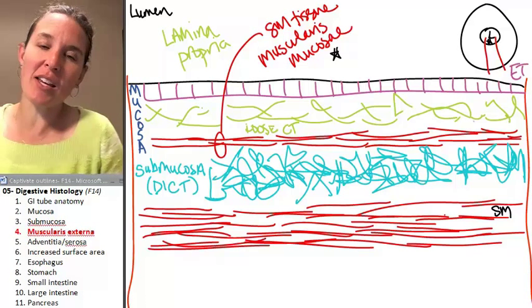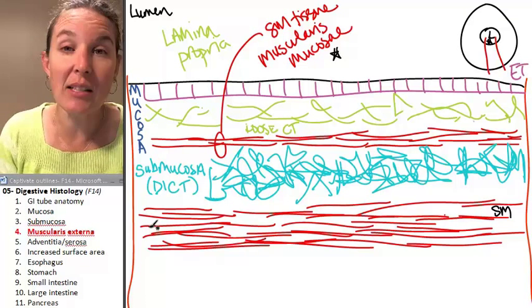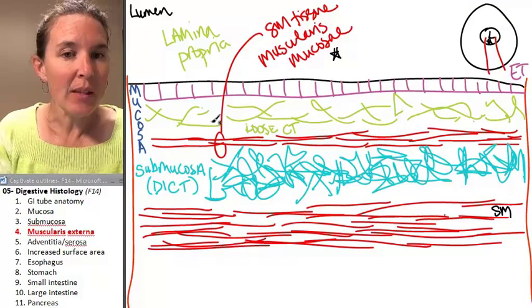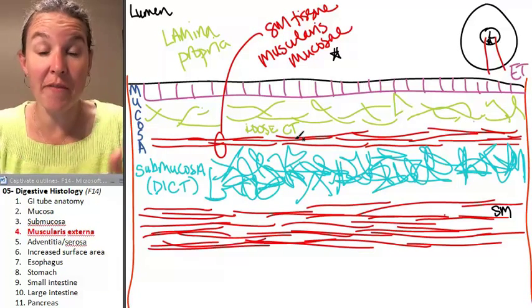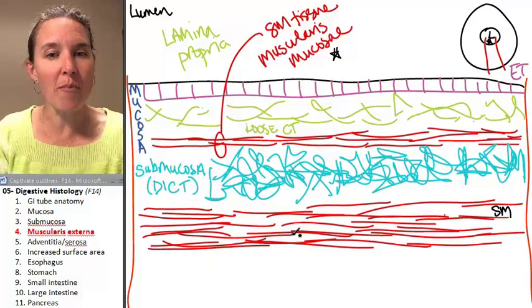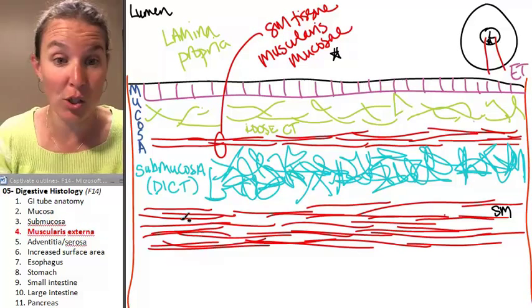And this is actually, okay, this is really cool. This layer is called muscularis externa. Here we had muscularis mucosae because it's part of the mucosa. Here we have muscularis externa because it's part of the external portion of my tube.